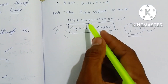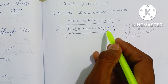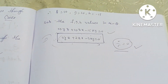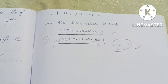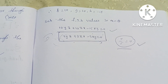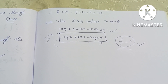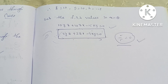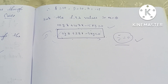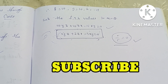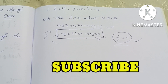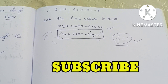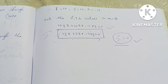2yz + 2zx − 3xy = 0 is our solution. If you want math notes, a video link will be provided. Please like and subscribe to our channel and press the bell icon.